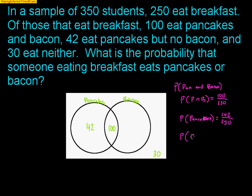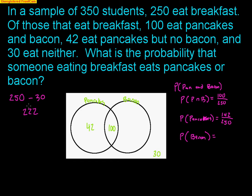The probability that somebody likes bacon — this is what I don't know, because I know that 100 kids like bacon and also like pancakes, but I don't know what the bacon-only count is. I need to use the fact that there are 250 kids. If there are 250 students that eat breakfast, take away the 30 that are neither, that leaves me with 220 students that like either pancakes or bacon. So I've actually already answered my question.